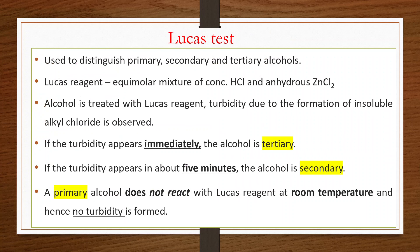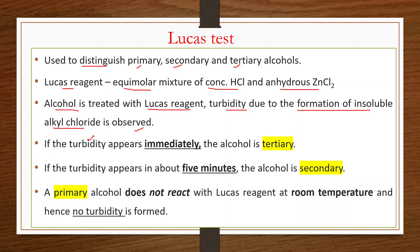First, the Lucas test, used to distinguish primary, secondary, and tertiary alcohols. Lucas reagent is an equimolar mixture of concentrated HCl and anhydrous ZnCl₂. When alcohol is treated with Lucas reagent, turbidity forms due to insoluble alkyl chloride. Turbidity appearing immediately indicates tertiary alcohol; turbidity in about 5 minutes indicates secondary alcohol. A primary alcohol does not react at room temperature, so no turbidity forms.